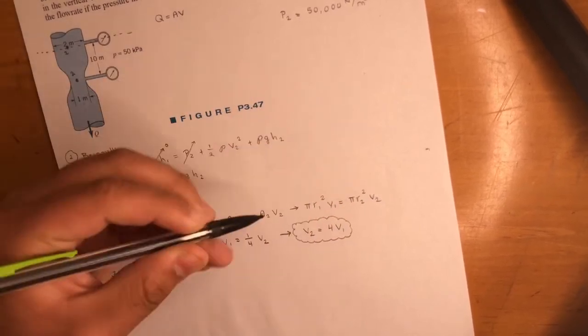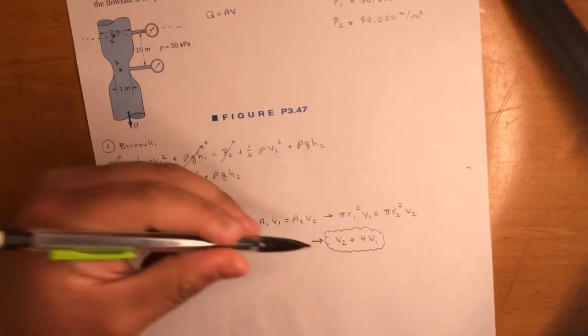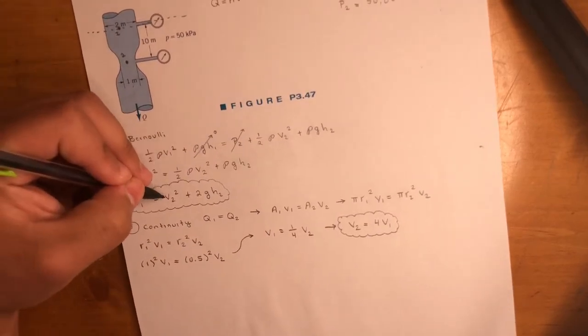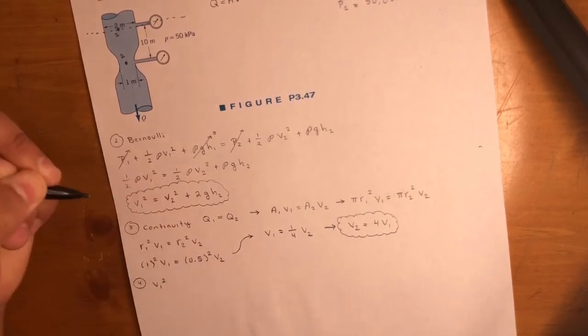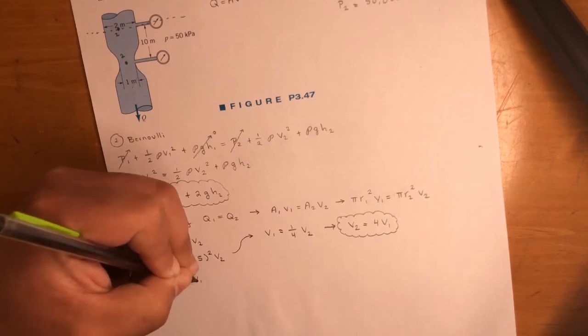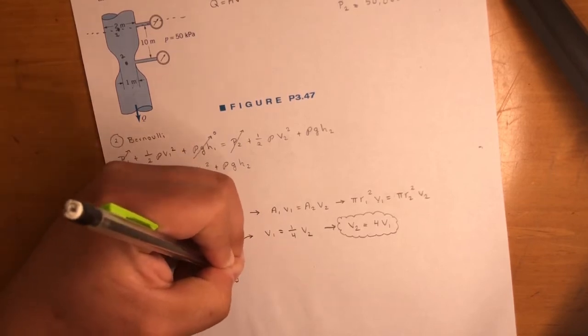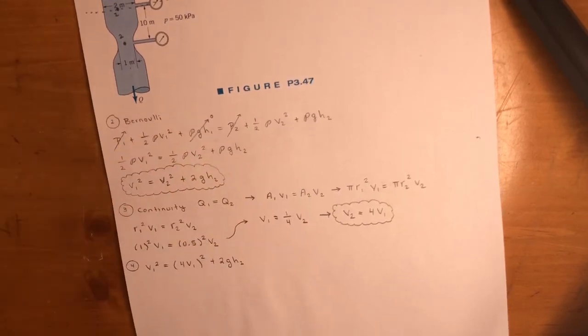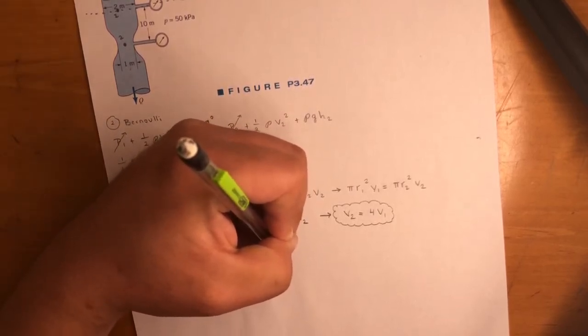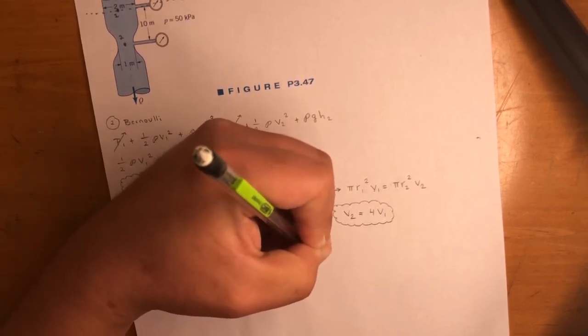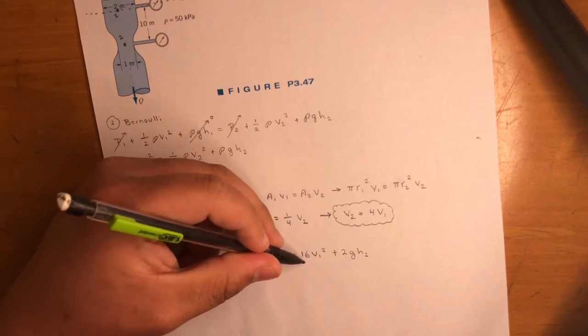So what this means: you could use any of these two, I just prefer no fractions. Now for every V2 we see in this equation up here, we're going to plug in 4 V1. Thankfully, it only comes up once, right here. Step four: plug in. We got V1 squared is equal to 4 V1 in parentheses squared plus 2 g h2.